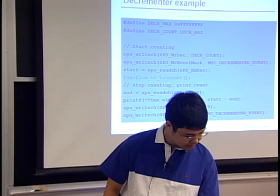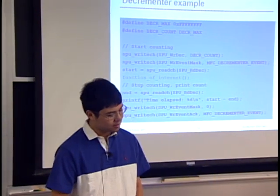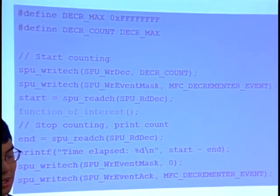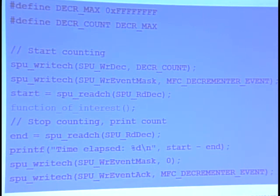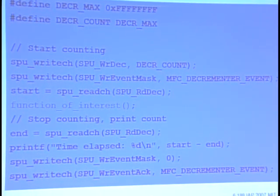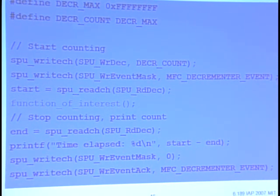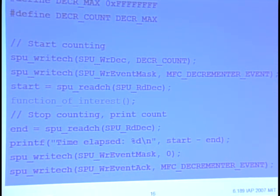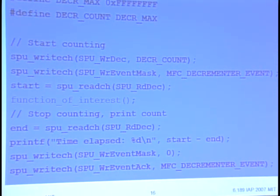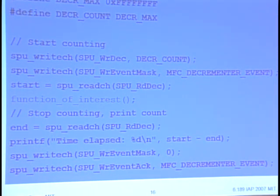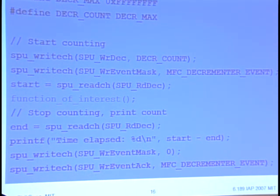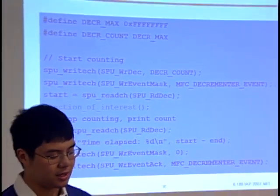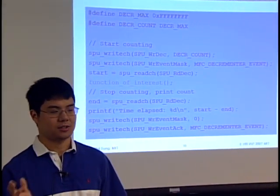There are SPU write channel and SPU read channel functions which give you access to some of the internals of the cell processor. Here's an example setup you can use: first you call write_channel and pass in the MFC_DECREMENTER_EVENT, which will initialize the decrementer counter for you. Then you read the value before and after the function you want to profile. Subtracting gives you the elapsed time in arbitrary units. And of course it's counting down, so you want to subtract the start from the end. After you're done using it, you can do another write_channel to stop the counter.